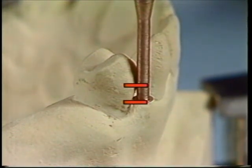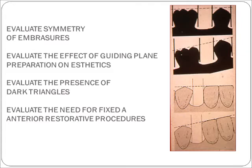The embracer spaces may be evaluated for symmetry. Symmetrical embracer spaces will be more aesthetic. Embracer spaces are also evaluated for the effect of guide plane preparation. Occasionally, guide plane preparation may be minimized or made more aesthetic by judicious tipping of the cast. Fixed restorations are normally recommended for anterior modification spaces. Also evaluate for the presence of dark triangles; sometimes these can be adjusted by anterior-posterior tipping of the cast. However, this gives precedence to this particular item over the path of insertion, so one should carefully evaluate whether a fixed restoration would be more useful.